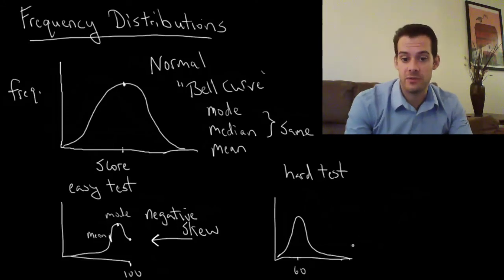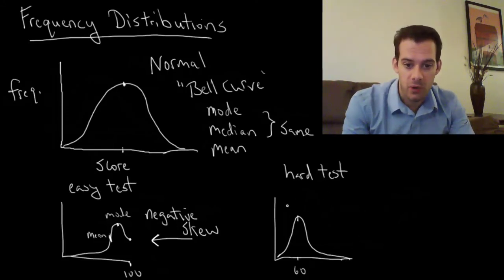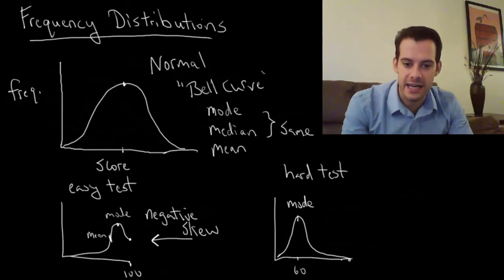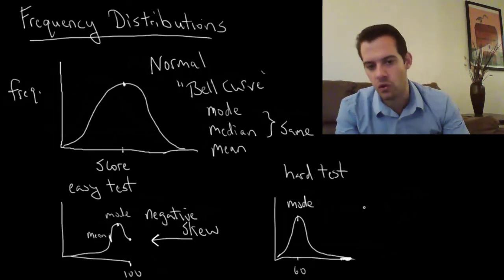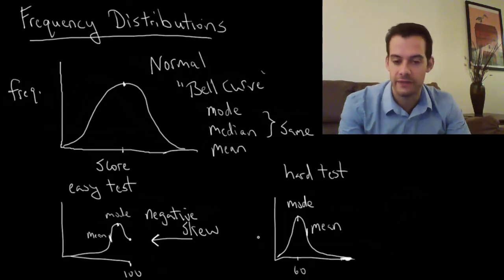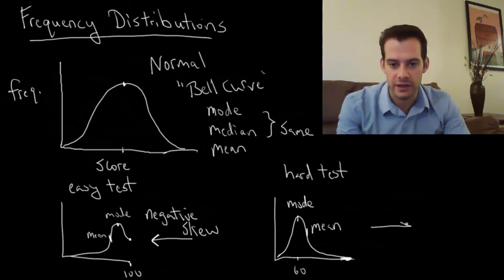So what's going to happen in this distribution? Well, again, our mode is going to be here at the peak, but this time our mean is going to get pulled. These high scores over here, the student who earned 100, is going to pull the average up. So the mean is going to end up somewhere to the right of the mode in this case. It's pulled in this direction and this is referred to as positive skew.